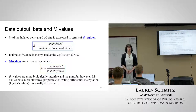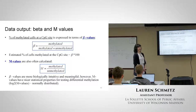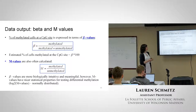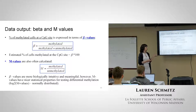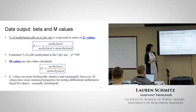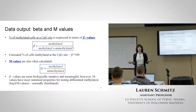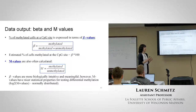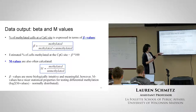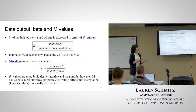You can also get M values - that's just the ratio of methylated to unmethylated. Beta values are more often used because they're more biologically intuitive and meaningful. But M values have nicer statistical properties for testing differential methylation. If you take the log base two of the M value, it's normally distributed, so for certain tests you might want to use the M value.